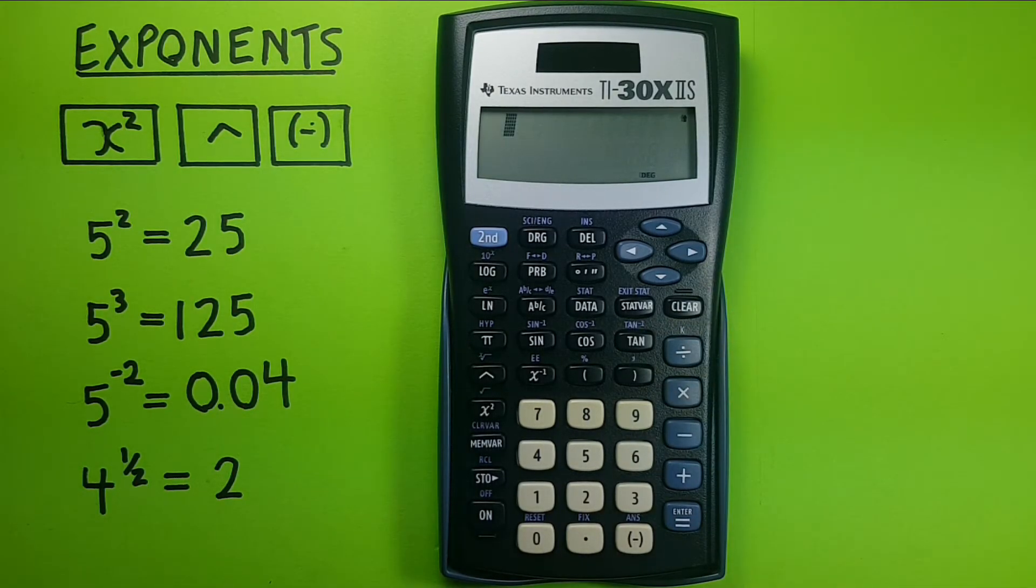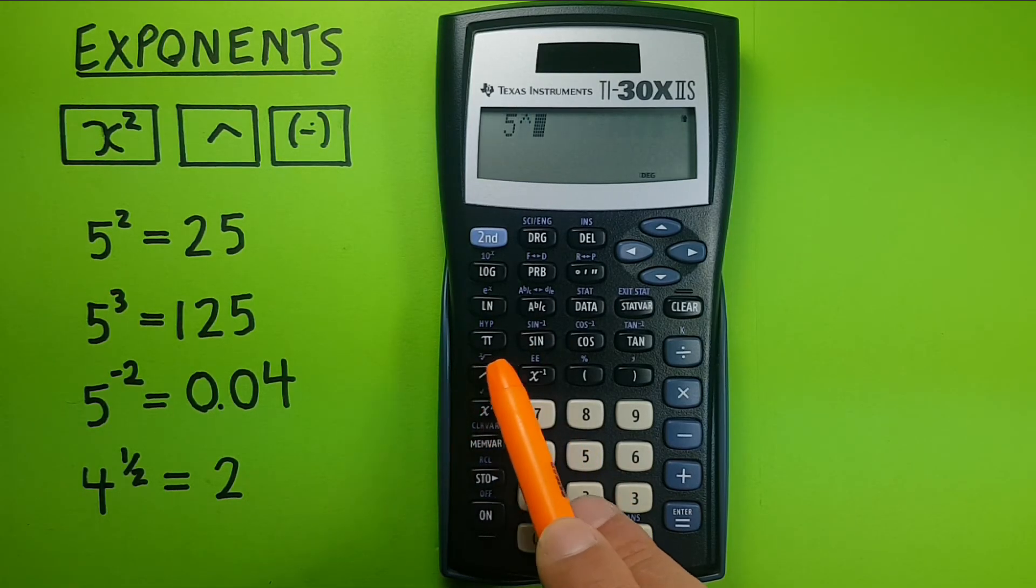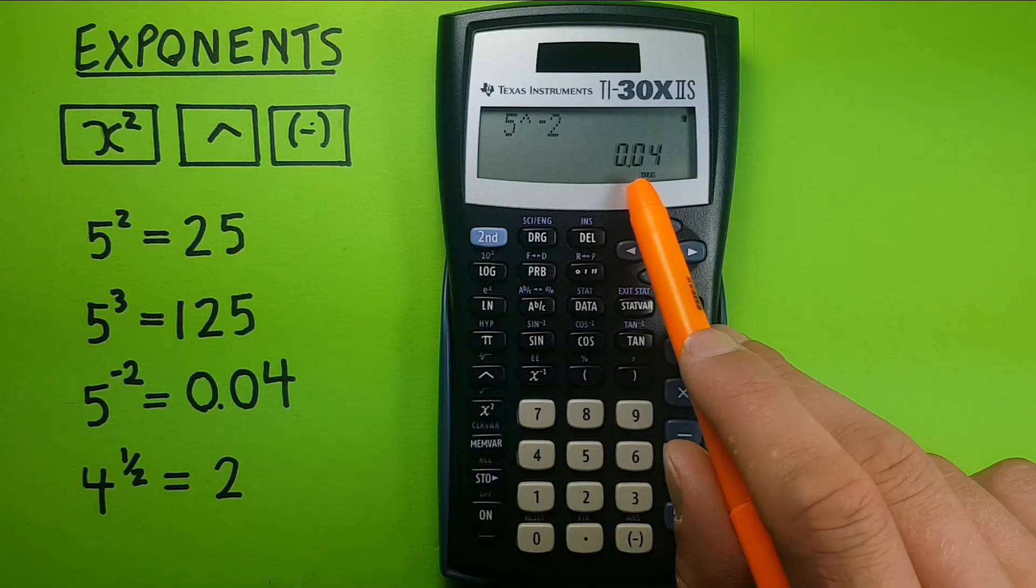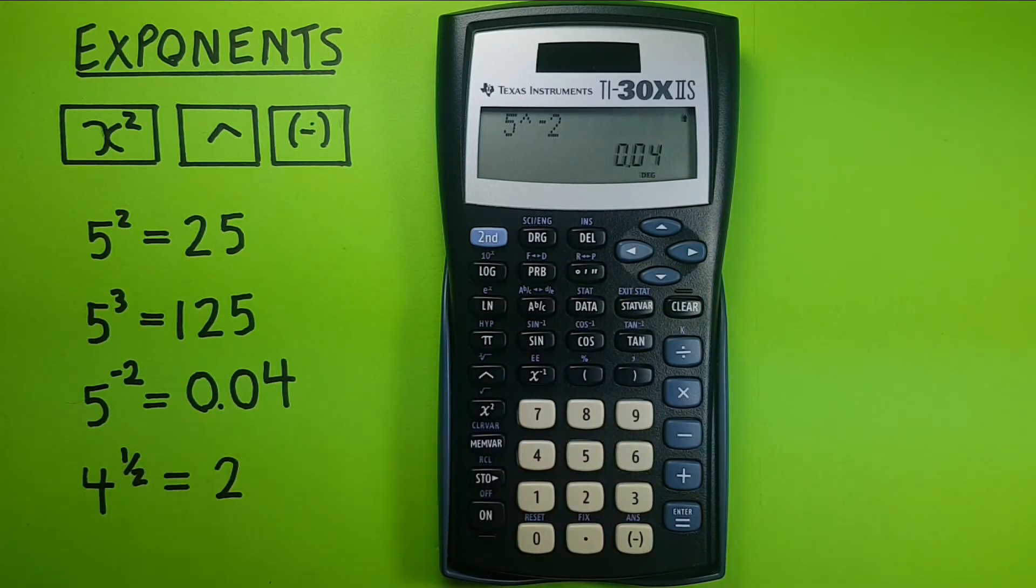If we want to do a negative exponent, let's say five to the power of negative two, we would enter the five, the up arrow or caret, the negative, and the two, and then press equals, and we get 0.04, which is correct.